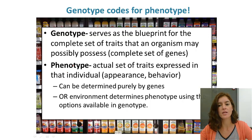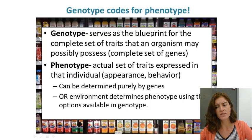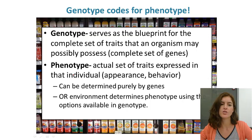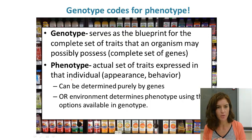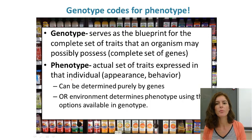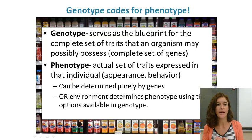The phenotype is the actual set of traits expressed in that individual — what's actually shown on the outside. We do have some genes in our chromosomes that aren't expressed; in biology we learn about dominant versus recessive genes. A phenotype cannot exist without the genotype. Think of a grocery store juice aisle — that's the genotype, every option available. What you put in your cart and take home is your phenotype, what you're actually using.